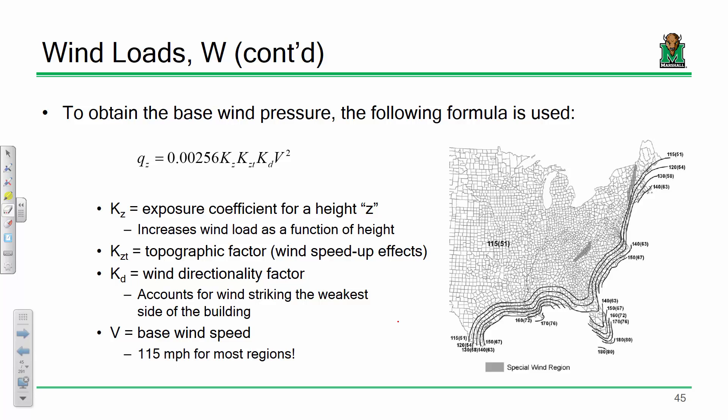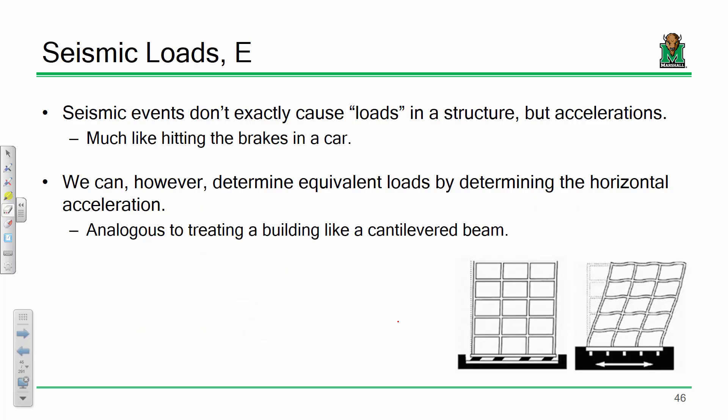The base wind speed map for the United States shows most of the country uses 115 mph, except for coastal areas, which use higher wind speeds due to hurricanes. There are also special wind regions where speeds get bumped up — for instance, the Bluefield area in southern West Virginia is in a special wind region.